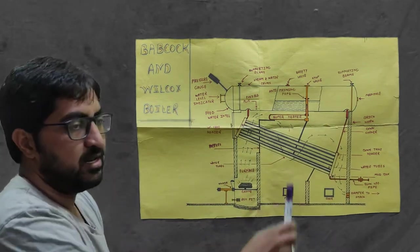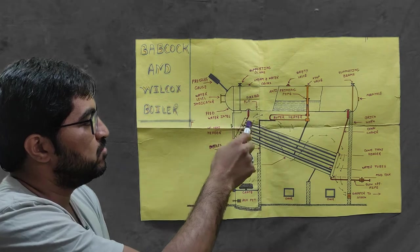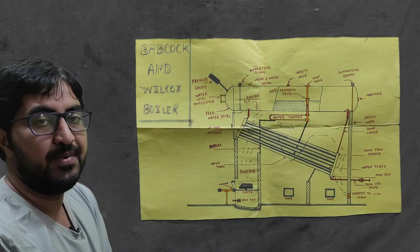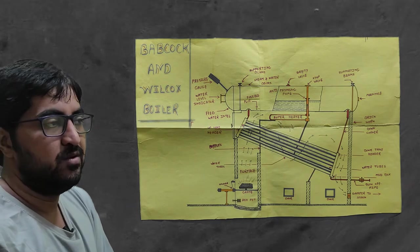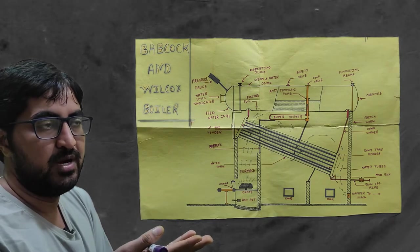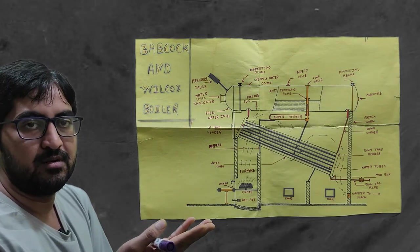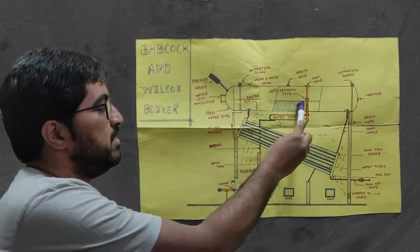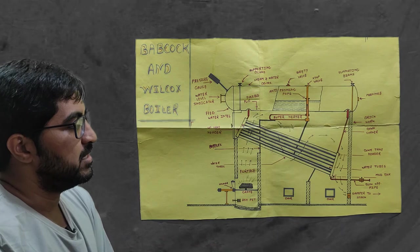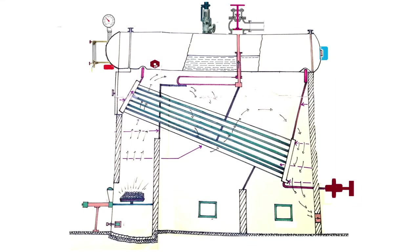When we fill water in the shell, due to gravity it first passes through the vertical tubes, then fills the inclined tubes. Generally we provide an inclination of 5 to 15 degrees to enable natural circulation. Due to density difference, when we increase the temperature of a fluid its density is reduced. Steam with lower density collects on the top side, while water with density of 1000 remains at the bottom. The inclination in the tubes promotes natural circulation, so steam collects at the top of the shell and water remains at the bottom.